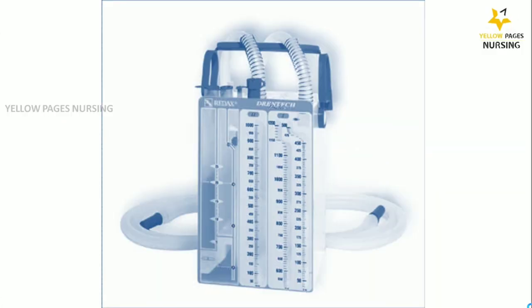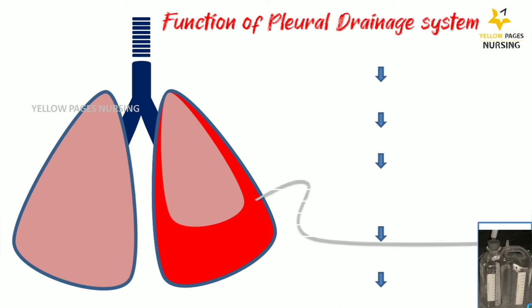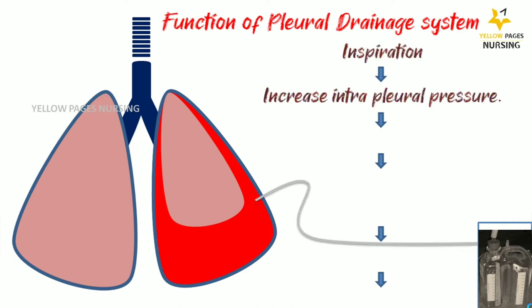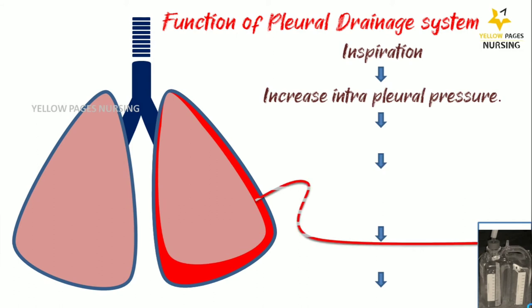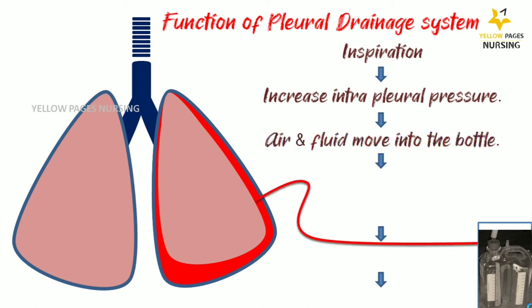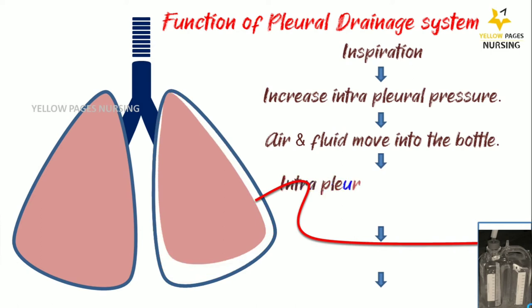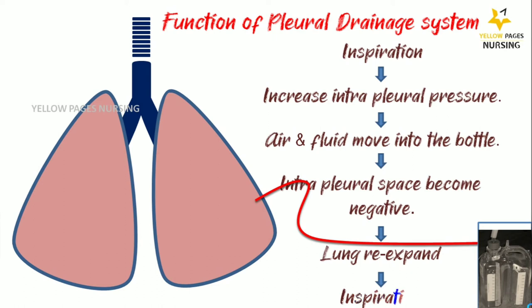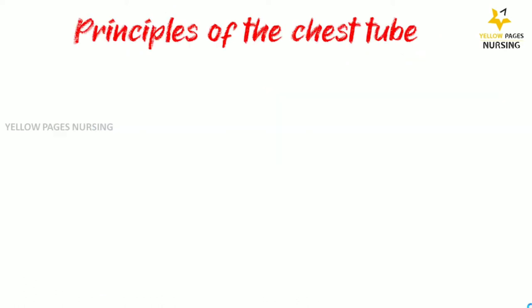Here you can see the function of a pleural drainage system explained as a flow chart. Inspiration causes an increase in intrapleural pressure, whereby air and fluid move into the bottle. The intrapleural space becomes negative, causing the lung to re-expand, completing the cycle. The three main principles of the chest tube are gravity, water seal, and suction.